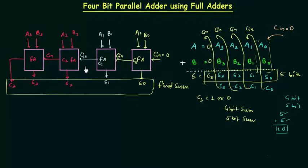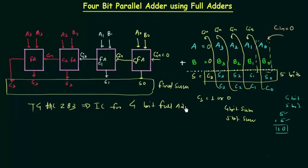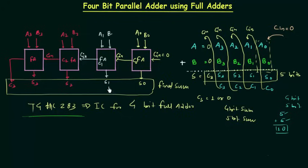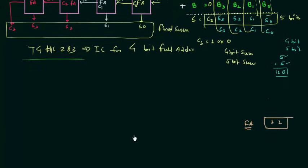We can add multiple bits as well. This circuit comes in an IC package and the IC is 74HC283, which is the IC for a 4-bit full adder. You can purchase this from the market. We also have an IC for an 8-bit full adder, but not for a 16-bit full adder. You can obtain an 8-bit full adder by cascading two 74HC283 ICs, which is a very popular circuit.